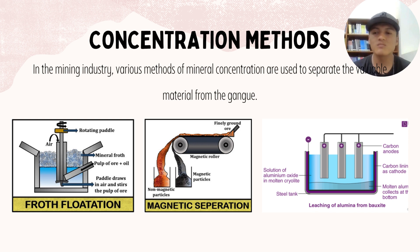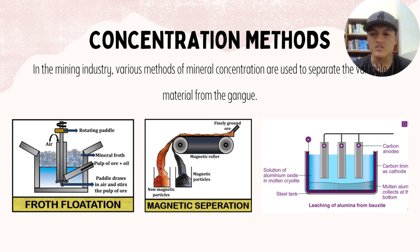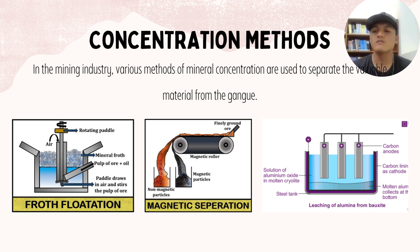The next method is magnetic separation. This method uses the attraction of certain minerals to a magnetic field, taking advantage of the differentiated magnetic properties of minerals to separate useful material from the gangue. Finally, leaching is a process used for the recovery of metals from ores or concentrates. It consists of dissolving the metal by means of a reagent and then precipitating it.